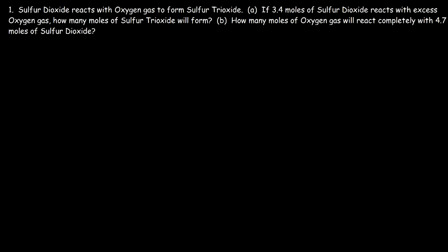This video will provide a basic introduction into stoichiometry. For most chemical reactions, there are basically three types of conversions you need to concern yourself with. The first type is to convert the moles of substance A to the moles of substance B, and you need to identify the molar ratio in order to do that.